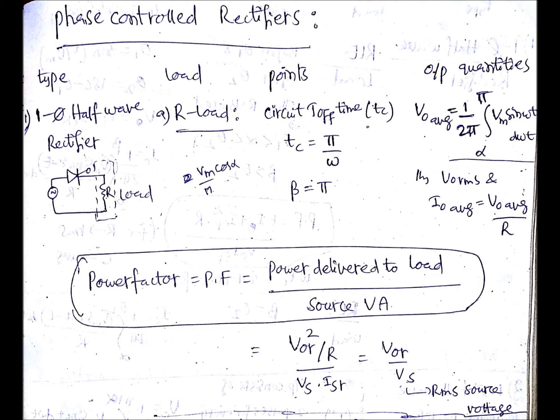One more important point is power factor. The definition for power factor is power delivered to load divided by source VA. Remember that is source VA, meaning volt amperes. Kilowatts by VA is power factor, active power by apparent power.